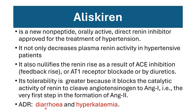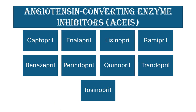Its tolerability is greater than ACE inhibitors as well as angiotensin receptor blockers. Adverse effects of aliskiren include diarrhea and hyperkalemia. Angiotensin converting enzyme inhibitors include captopril, enalapril, lisinopril, ramipril, benazepril, perindopril, quinapril, trandolapril, and fosinopril.